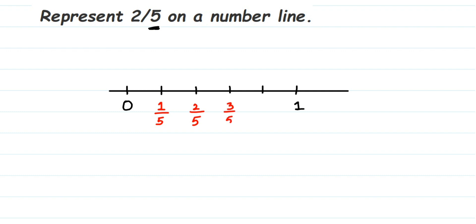The next will be 3 by 5, the next will be 4 by 5, and the next will be 5 by 5. So 5 by 5, when you cancel it, equals 1. That's why we have written 1 here.